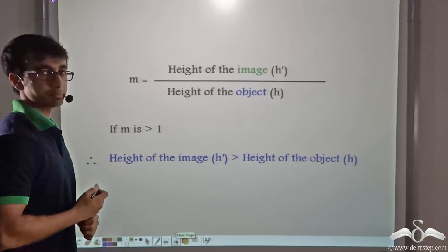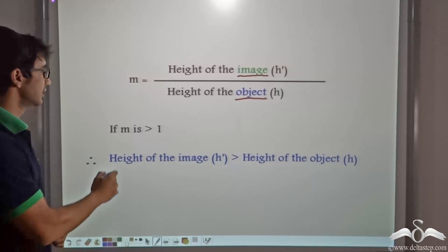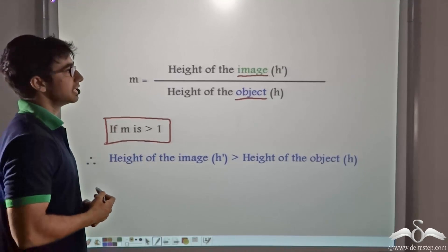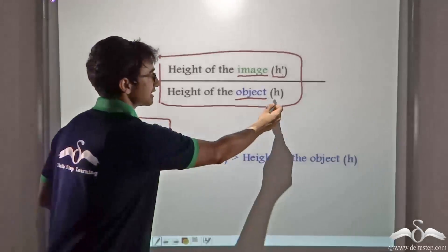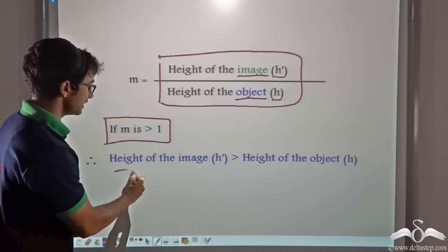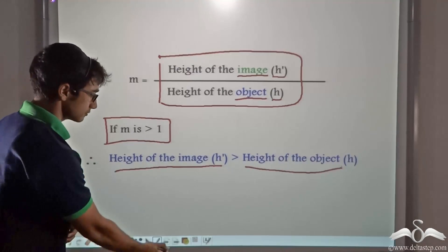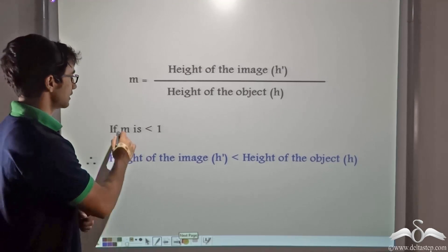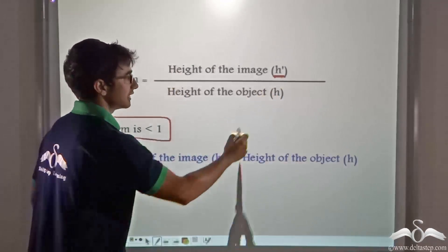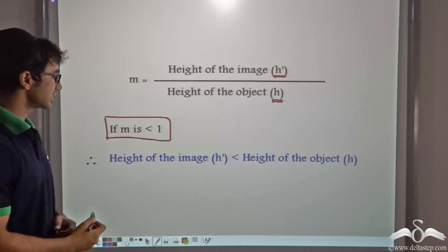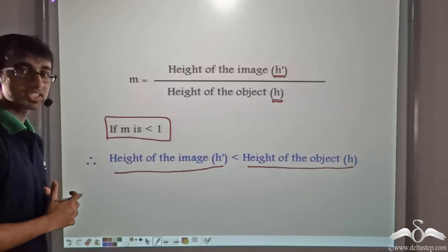Now, M is expressed as the ratio between height of the image to the height of the object. If the value of M is greater than one, it means the numerator H' is greater than the denominator H — in other words, the height of the image is greater than the height of the object, and the image is being enlarged. Similarly, if M is less than one, the numerator is lesser than the denominator, meaning the height of the image H' is lesser than the height of the object H, and the image is being diminished.